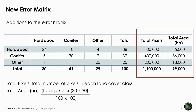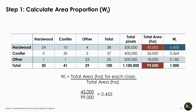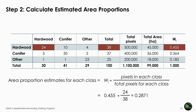Now we are going to add additional information to the error matrix to enable us to calculate unbiased area estimates. The first thing is to calculate the total number of pixels in each land cover class using your GIS software. In this example, there are 500,000 pixels in hardwood, 400,000 in conifer, and 200,000 in other. You can convert the pixels into hectares using the formula specified. Next, calculate the proportion of each class to the total, called W sub I. For hardwood, dividing 45,000 by 99,000 hectares gives 0.455. The total of W sub I should equal 1.